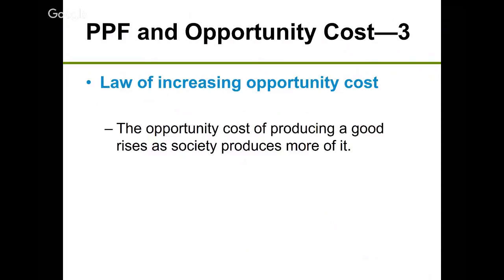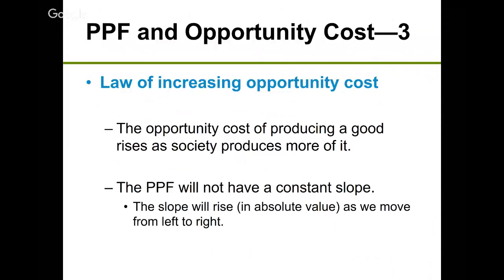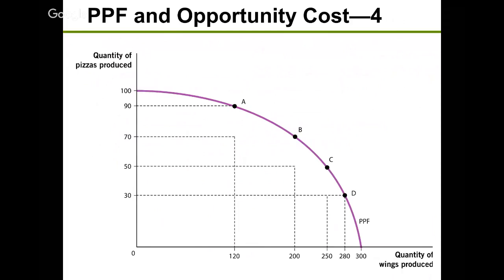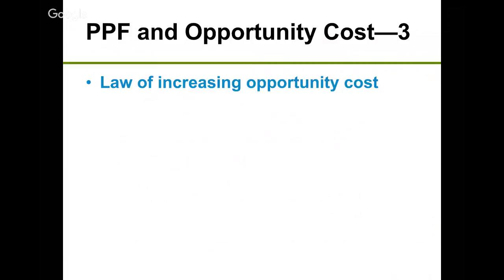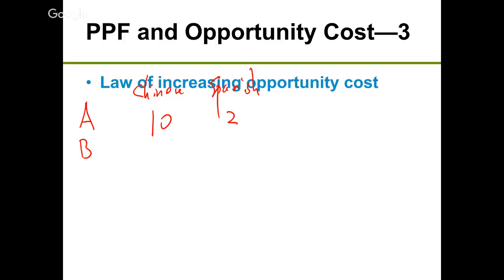There's also the law of increasing opportunity cost — the opportunity cost of producing a good increases as society produces more of it. Because of this law, the PPF is bowed outward rather than a straight line. For example, suppose we have two workers, person A who is very good at Chinese translations — 10 Chinese and 2 Spanish papers — and person B who is very good at Spanish — 10 Spanish and 2 Chinese papers.